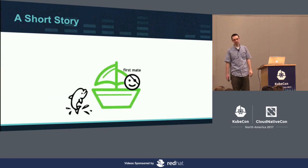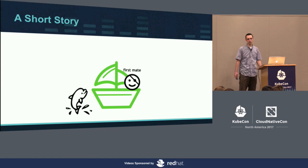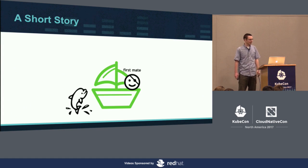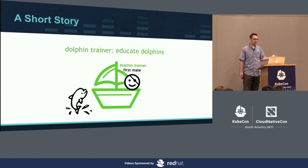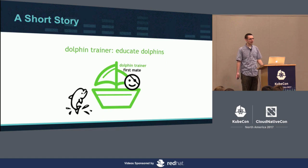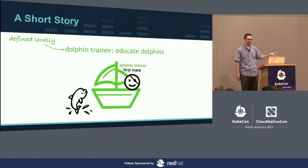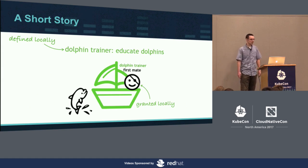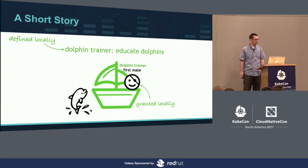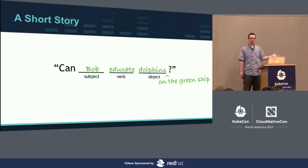Training the crew got boring, so one day Bob asked if he could also train dolphins. His captain thought that was a little weird, but said, all right, Bob, I'm going to give you, in addition to your first mate role, the role of dolphin trainer, and you are allowed to educate dolphins. But we're not going to use this role on any other ships, so we're just going to define this role locally. Because it's defined locally, it's also only granted locally. Now Bob has two roles — dolphin trainer and first mate — and he can do anything that either of those roles allows. So, can Bob educate dolphins on the green ship? The answer is yes.